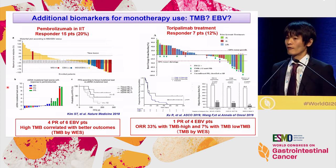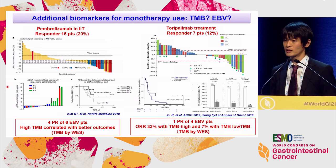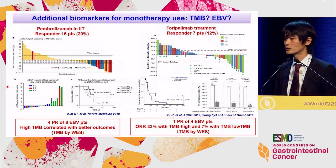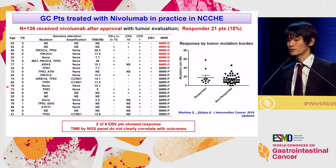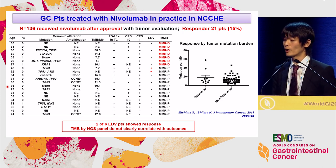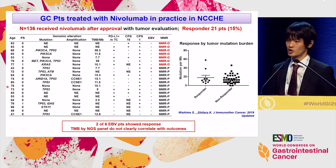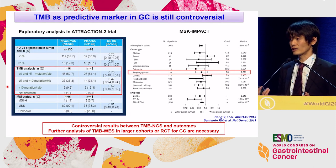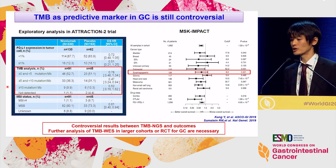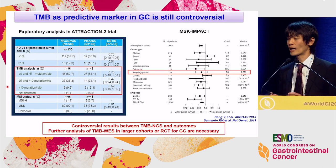Regarding biomarkers: the first Pembrolizumab investigator-initiated trial suggested a high response rate in EBV-positive cases or high TMB cases by whole exome sequencing. A recent Chinese trial showed one partial response among four EBV cases, so not all responded. Response rate was still higher in TMB-high patients by whole exome sequencing. In our institution, approximately 130 patients have received nivolumab after Japanese approval. We identified a 15% response rate, not a few cases with microsatellite instability, and two out of six EBV-positive cases showed an objective response. TMB by NGS did not clearly correlate with outcome. TMB by NGS remains controversial in other studies such as Attraction 2 and MSK IMPACT. It may be better to analyze TMB by whole exome sequencing and EBV status in a larger study like Keynote 62.